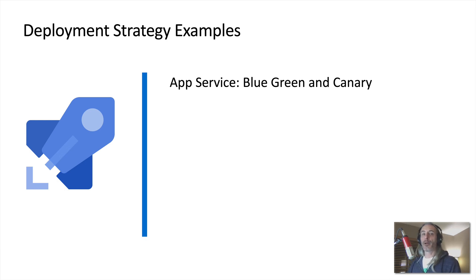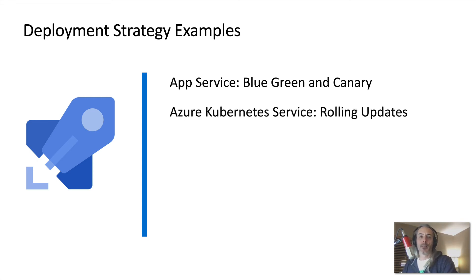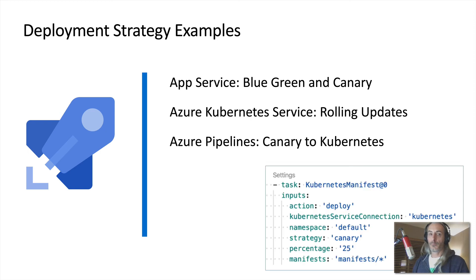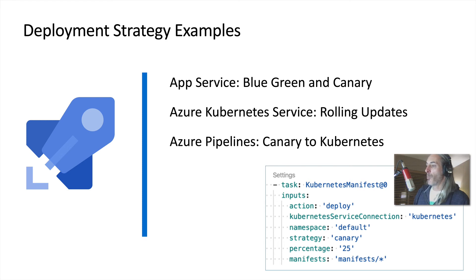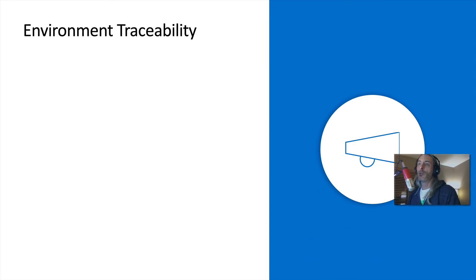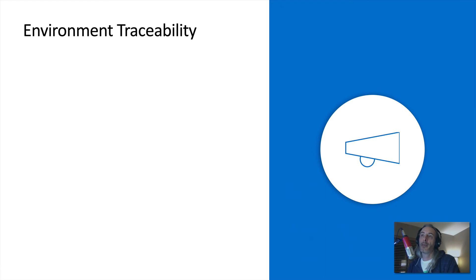Within Kubernetes, within AKS, and the services within Azure Kubernetes Services, as well as App Services and Azure Pipelines, various deployment strategies are already baked in. For App Services, blue-green and canary deployment strategies are already templated out. For AKS, rolling updates are already baked into the product. Azure Pipelines has canary to Kubernetes, which is a new thing that came out at Ignite — within our YAML file we can specify that we're using Kubernetes, set the strategy to canary, and specify that we want 25 percent of traffic shifted over.